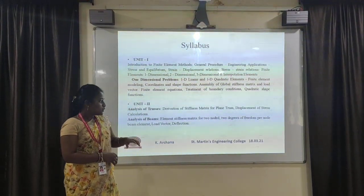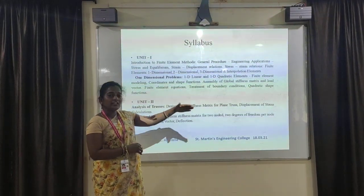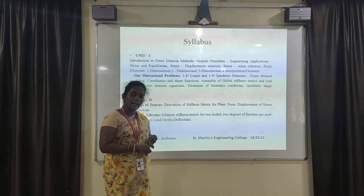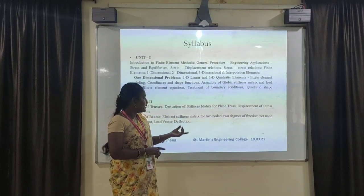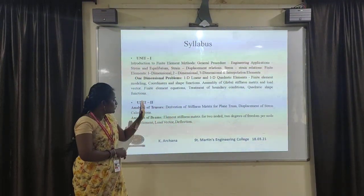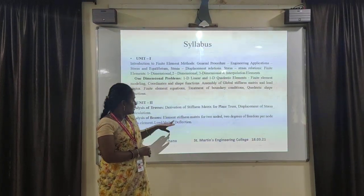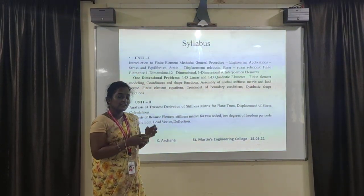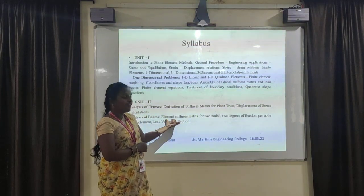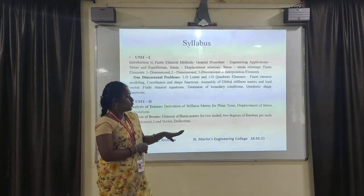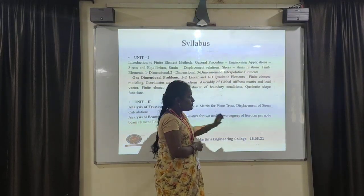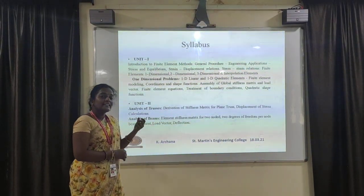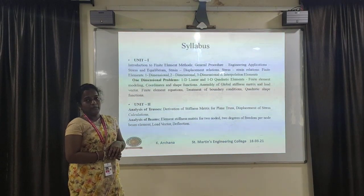The second part of unit two is the analysis of beams. Here we find out the element stiffness matrix for two nodes. In unit one we already discussed what elements and nodes are. Here we find out the element stiffness matrix for two nodes — two elements meeting at one point, which is the node. The second topic is the two degrees of freedom per node for the beam element and load with deflection. These topics are covered in the second part of unit two, that is the analysis of beams.